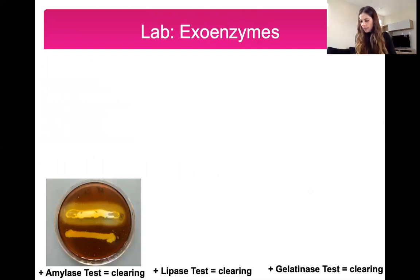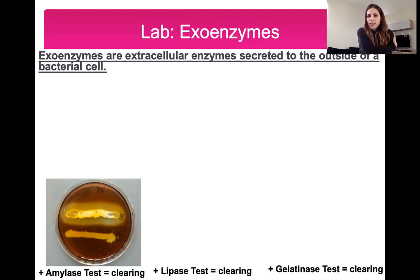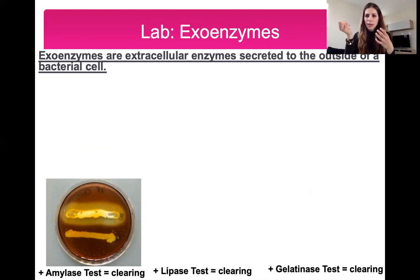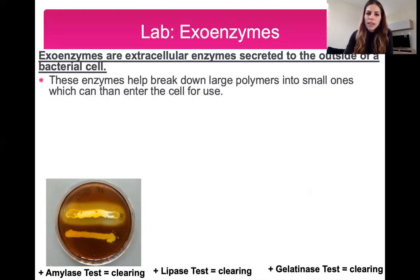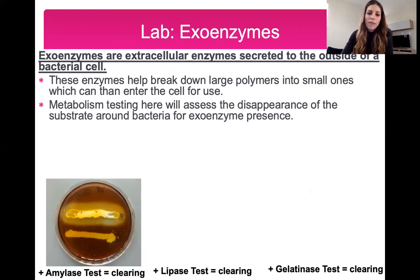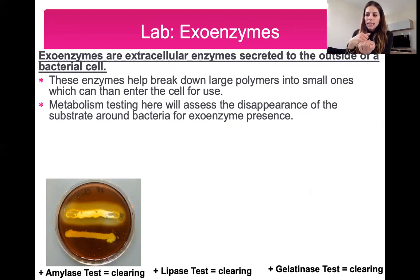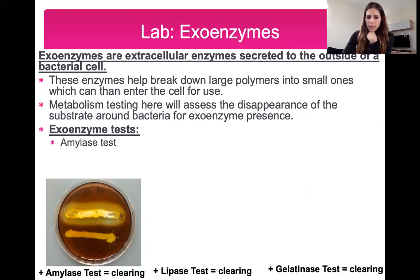Exoenzymes are extracellular enzymes that a cell secretes. They allow bacteria to break down large polymers — food and nutrients — into smaller ones that can then enter the bacterial cell for use. You basically grow bacteria on a medium containing the substrate the exoenzyme acts on, and if the exoenzyme is present, it will digest that substrate and you'll see a clearing. You're testing for three different exoenzymes: amylase, lipase, and gelatinase.